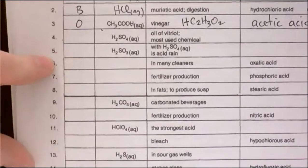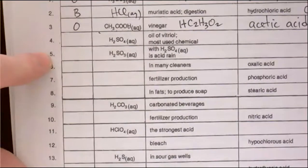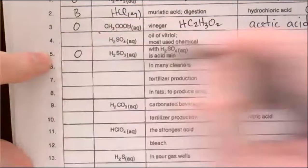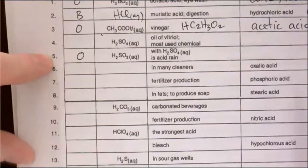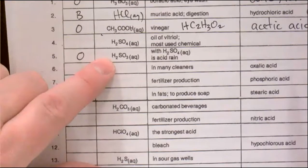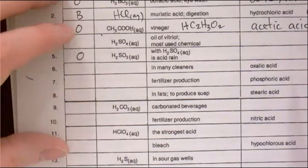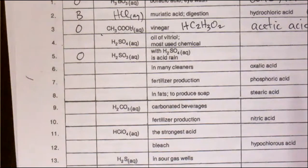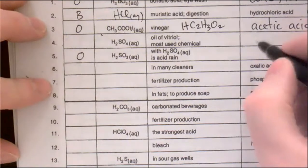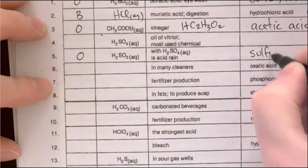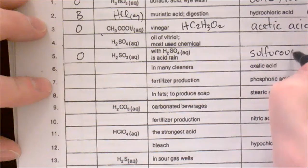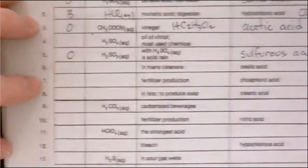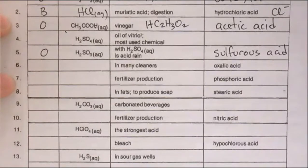Number five: H2SO3 is an oxy acid. Since it has two H's, the ion must be SO3 2-. Knowing that sulfate is SO4 2-, this must be sulfite. So if it's the -ite ion, the acid name ends in -ous acid: sulfurous acid.